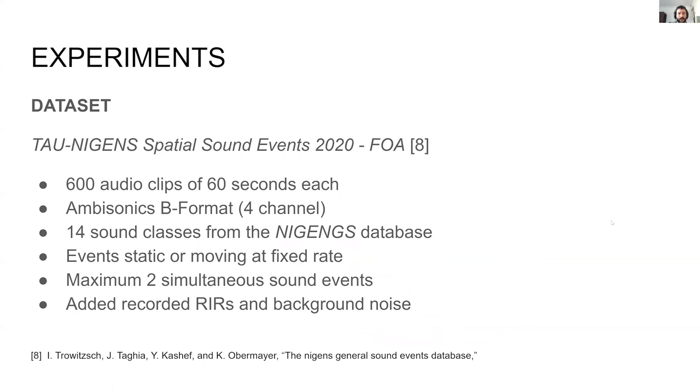The dataset used is the first-order ambisonic version of the TAU-NIGENS Spatial Sound Events 2020. It contains 600 sound scenes of 60 seconds of duration each. The sound scenes contain sound events belonging to one of 14 different classes, and they are taken from the NIGENS dataset. Sound events might be either static or move in circles at fixed angular velocities. Furthermore, all events have been convolved with recorded room impulse responses.